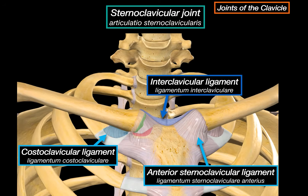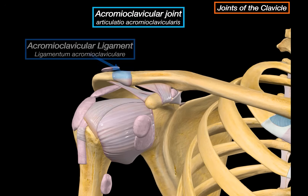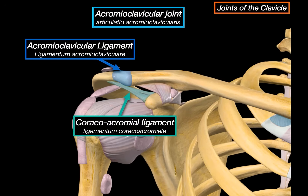Let's shift over to the acromioclavicular joint on the lateral end of the clavicle. First, we see the acromioclavicular ligament, which spans from the clavicle to the acromium and plays an important role in stabilizing the joint — it reinforces the joint capsule, a fibrous envelope that surrounds and seals the joint space. Next, we see the coracoacromial ligament, which goes from the coracoid process to the acromium. This doesn't connect to the clavicle, but it forms a kind of an arch above the shoulder joint — acting like a roof, preventing the humeral head from moving upwards out of space.